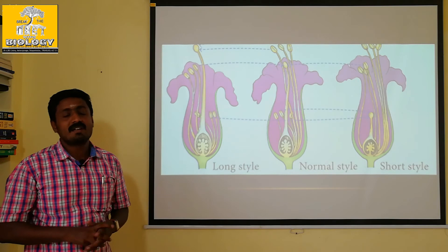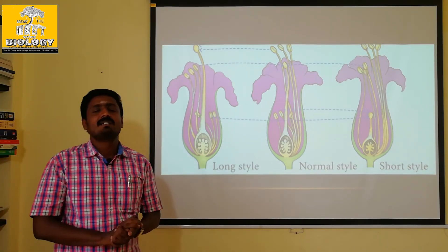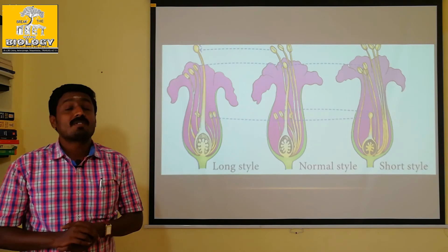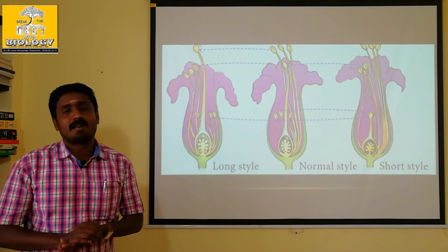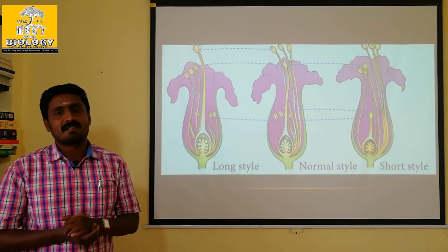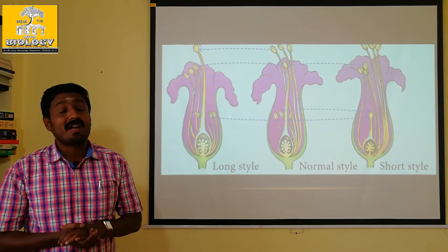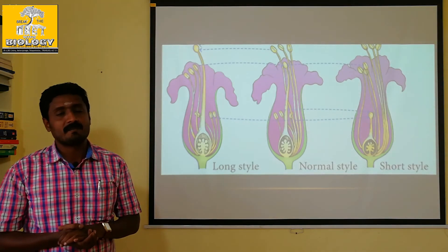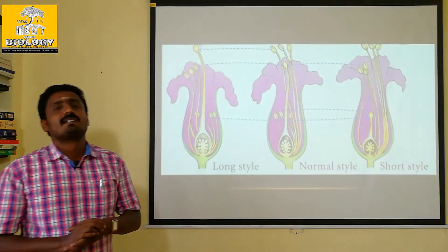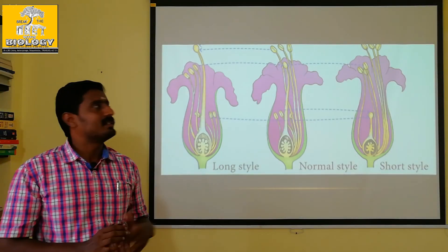This is the tristyly — the tristyle is one type. Contributions of cross-pollination: these characters are adapted by the plants themselves naturally.